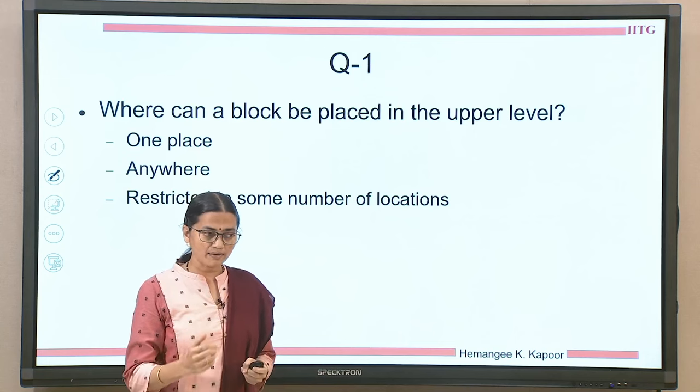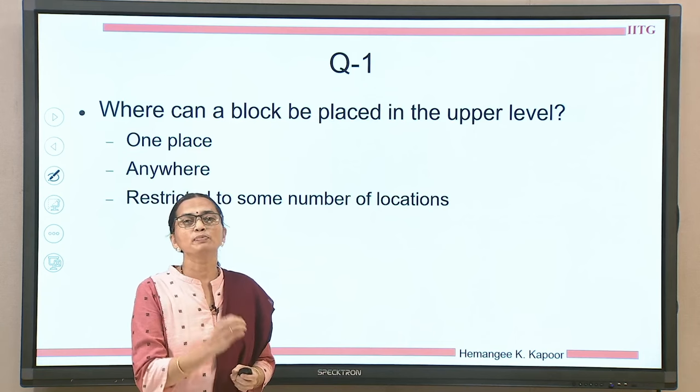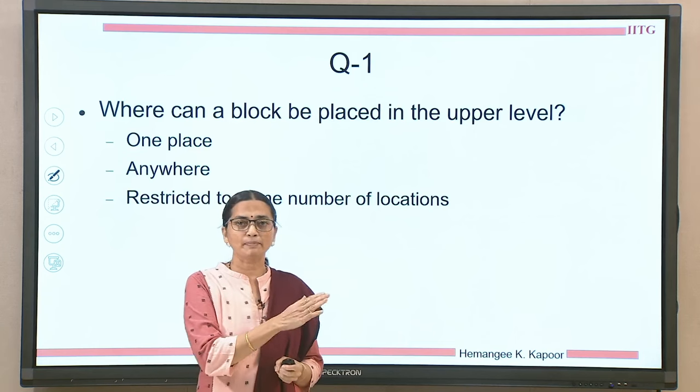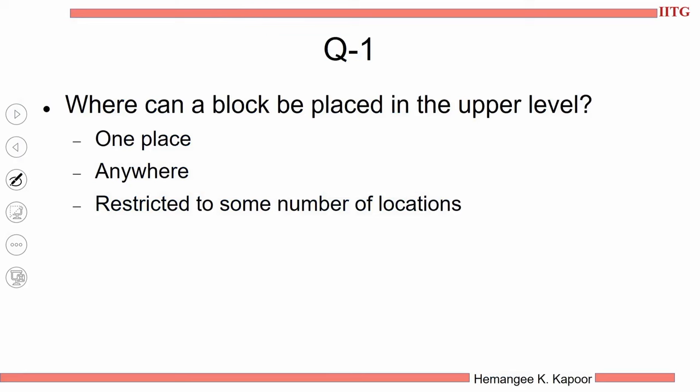When I bring a block from main memory, where do I place it in the upper level — either first level cache or second level cache? We have three options: be very strict and keep it in only one location; be very lenient and keep it anywhere; or give some limited choices.